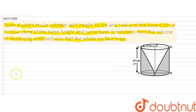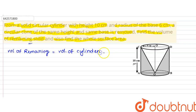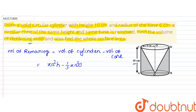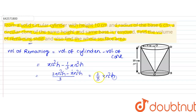Let's solve this question. First, we find the volume of the remaining solid. Volume of remaining solid = Volume of cylinder − Volume of cone. The formula for volume of cylinder is π r² h. Since radius and height are the same for both, taking 3 as LCM: (3π r² h − π r² h) / 3 = 2/3 π r² h.